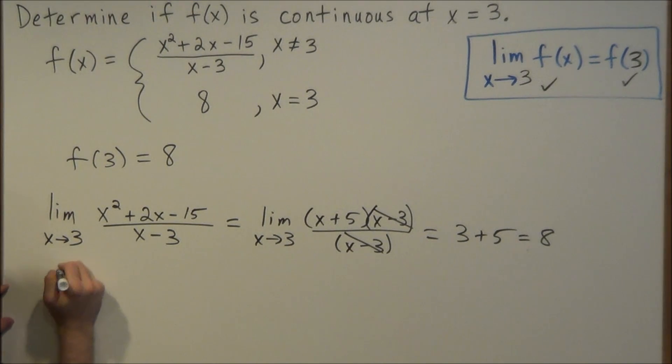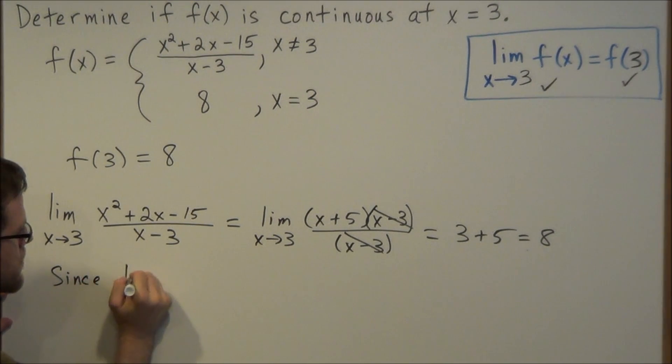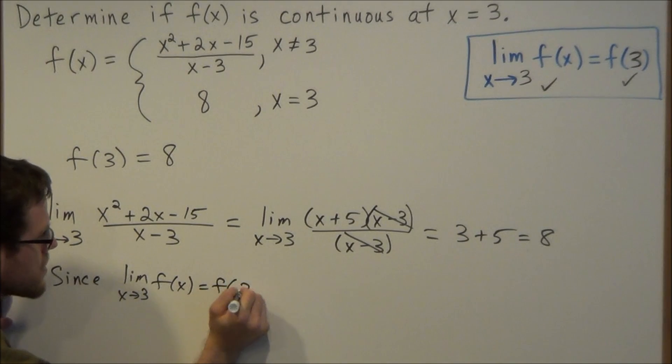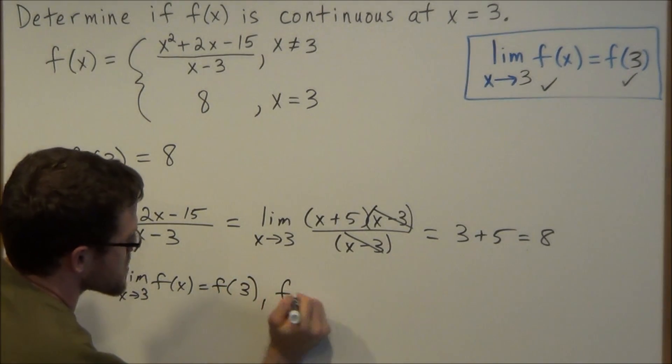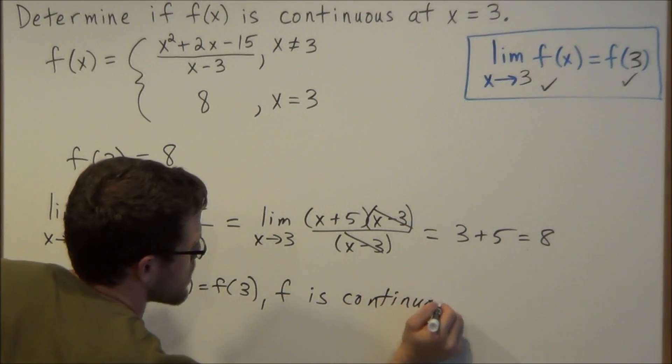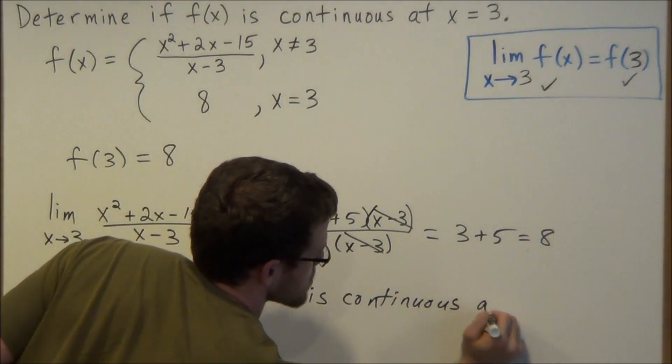So to conclude this with a sentence, we could say since the limit as x approaches 3 of f of x equals f of 3, f is continuous at x equals 3.